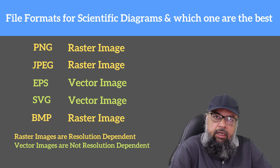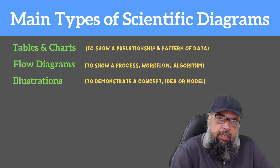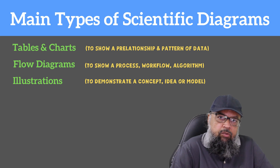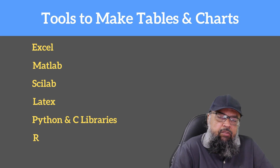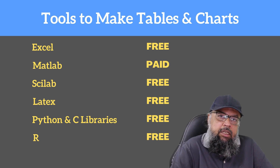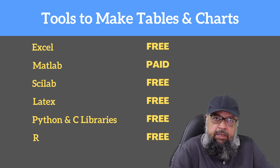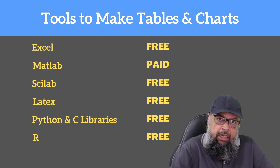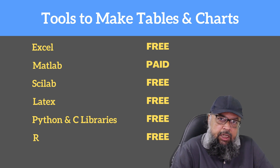When deciding a tool, you need to consider all types of diagrams — tables and charts, flow diagrams, and illustrations. For creating tables and charts, some tools include Excel, which has a free version; MATLAB, which is expensive but has more capabilities; and Scilab, which is an open-source free alternative to MATLAB. I have a few videos about Scilab on my channel to help you get started.